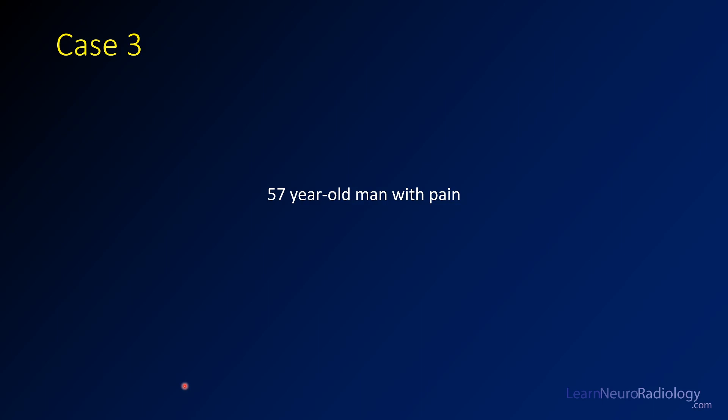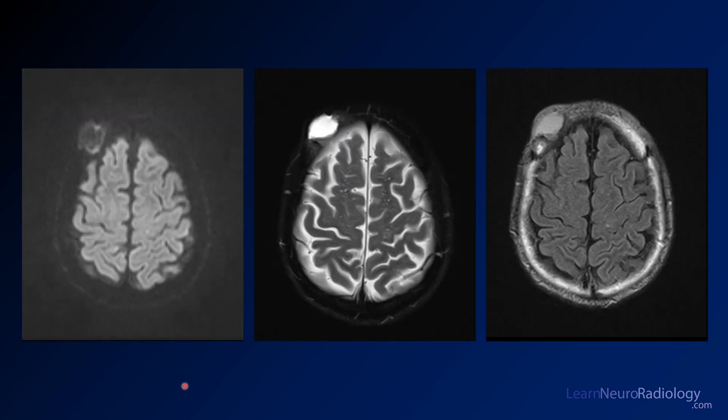This next case is a 57-year-old man with pain. In typical fashion we do not know where that pain is located. Here we have some images from an MRI of the brain. We have a diffusion on the left here, a T2 fat sat in the middle, and a FLAIR on the right here.